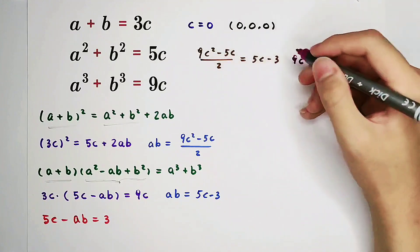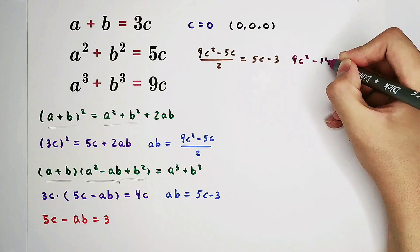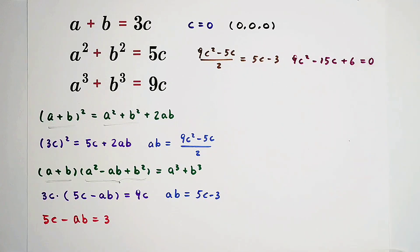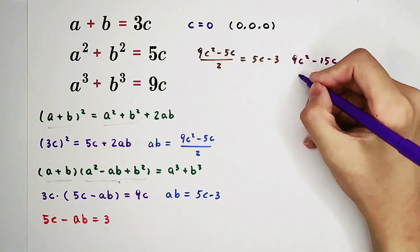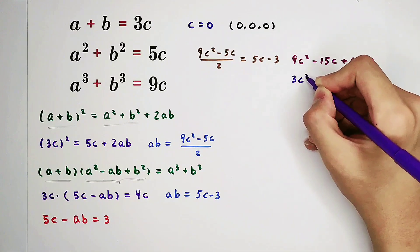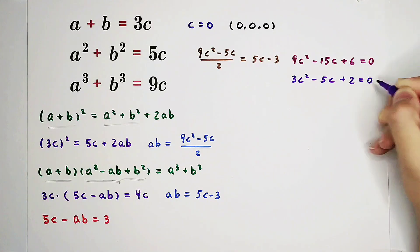9c squared minus 15c plus 6 equals 0. What can we do here? Divide both sides by 3. That is, 3 times c squared minus 5c plus 2 equals 0.